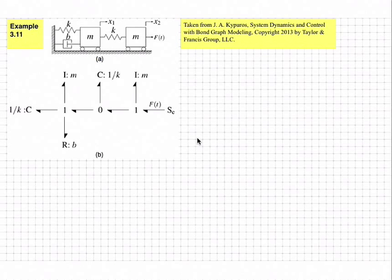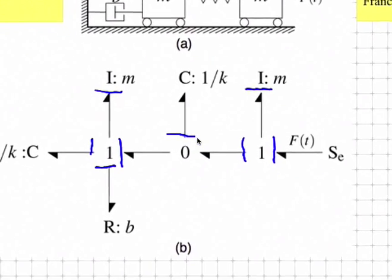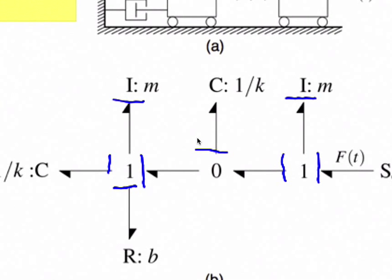Looking at the bond graph, we have an effort source, two I elements, two C elements, and an R element. The C's represent the springs, the I's represent the masses, the effort source represents the external force, and the R element represents the damper.